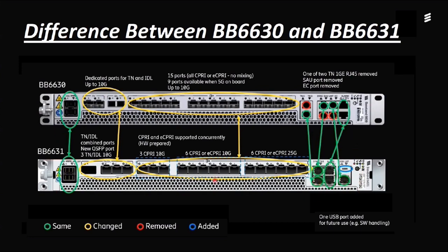Now we can see some key differences. The power port is the same between both units. However, in the 2630, the TN port and the idle port are separate — TN ports A and B are separate from idle ports A and B. In the 2631, TN and idle ports are already combined. So if you want to sync one baseband to another baseband, you can use the TN port.